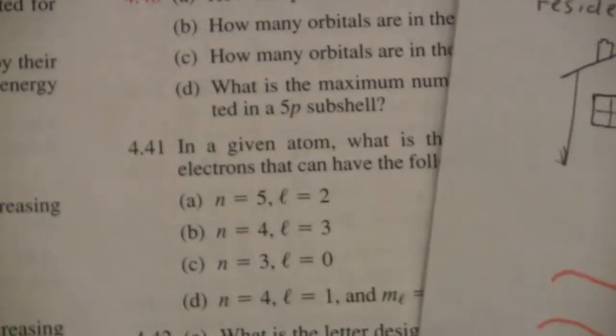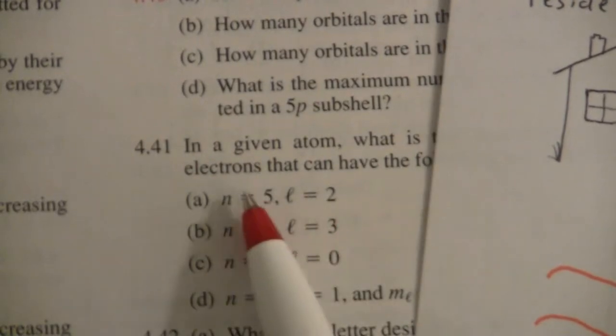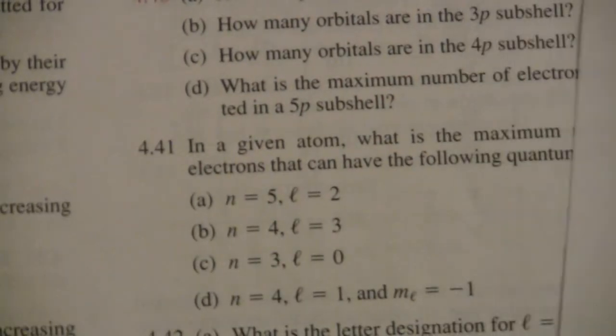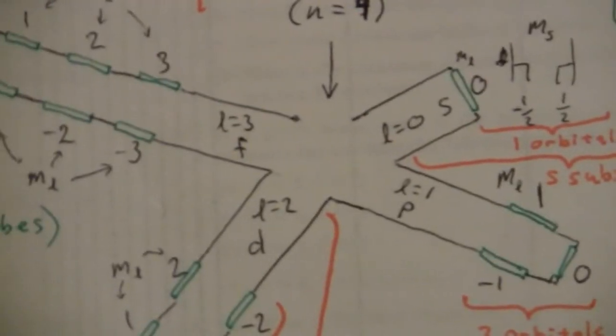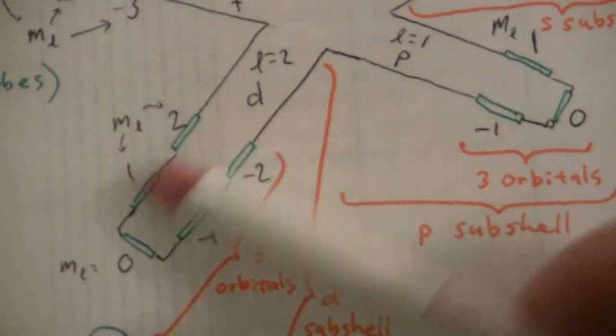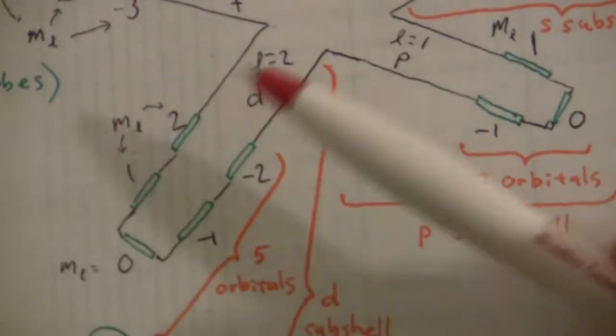Alright, so anytime l is 2, it doesn't really matter what level we're on. So here is l equals 2, and you'll notice the number of electrons here is 10 electrons that can fit. Five rooms, two electrons in each room.